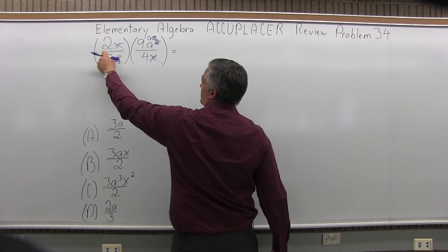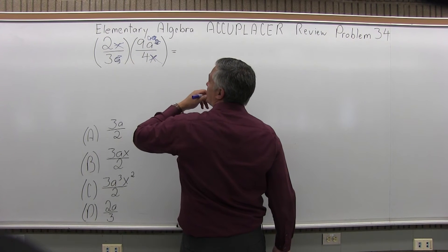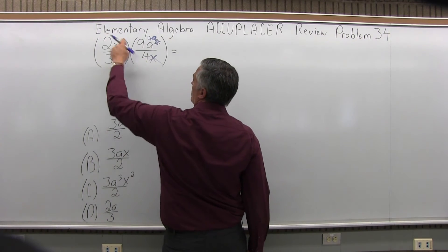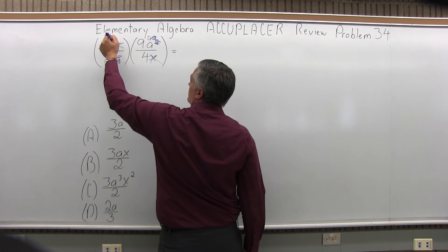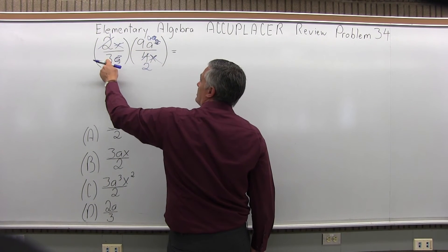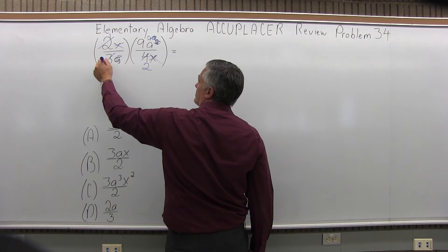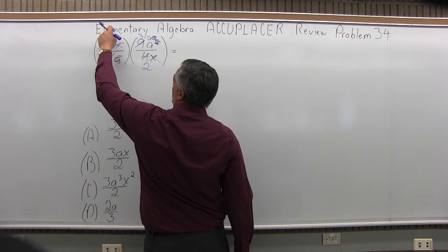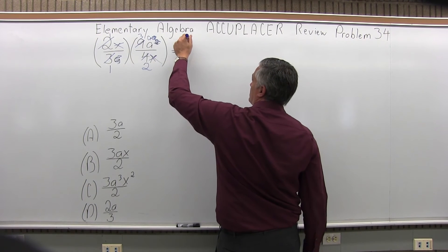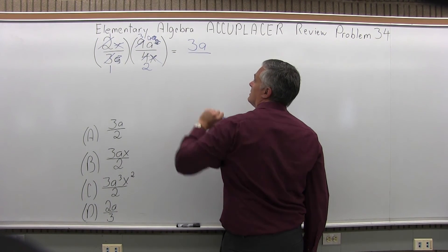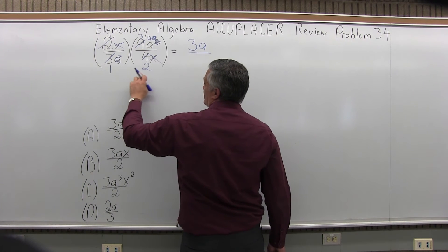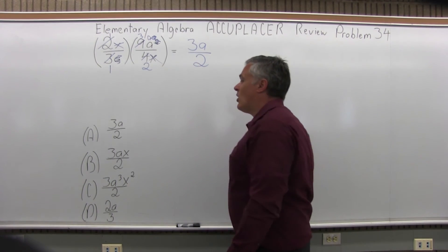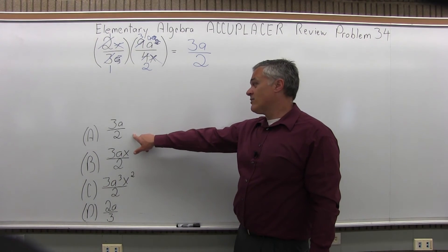I have 2 times 9a over 3 times 4. I can reduce even a little bit more — those numbers will reduce. Let's do the 2 and the 4: 2 goes into 2 once, 2 goes into 4 twice. The 3 and the 9 will also reduce: 3 goes into 3 once, 3 goes into 9 three times. What's left on top will be 1 times 3 times a, so 3a. In the denominator, what's left is just 1 times 2, which is 2. So I have 3a over 2, and that matches option A.